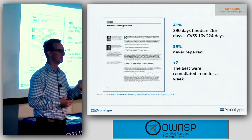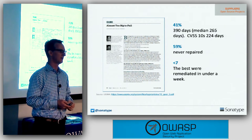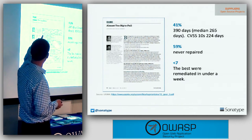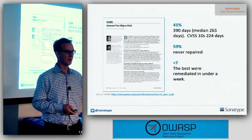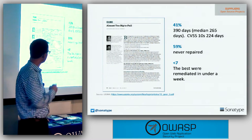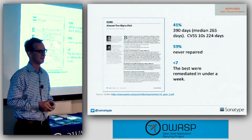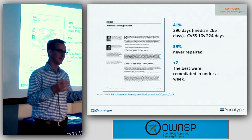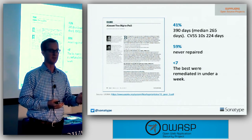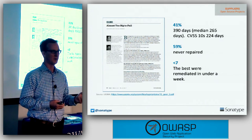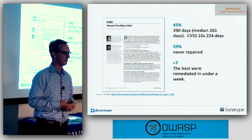Even when a new version of the component was released, only 41% of projects ever fixed the known, documented security vulnerability in those components and their dependencies. The average time to repair was 390 days. Dan Geer and Josh Foreman wrote an article about this research called 'Almost Too Big to Fail.' This doesn't include how long it takes you to instrument the repair within your own applications inside your organizations.